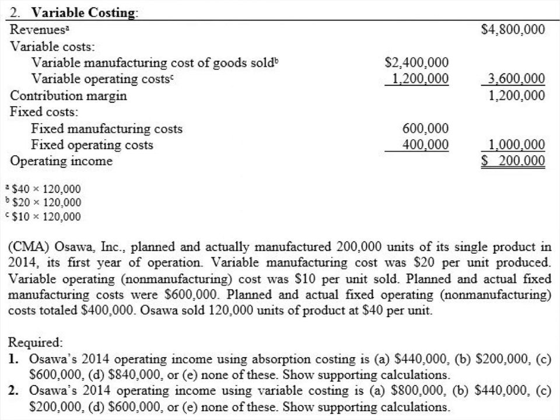Let's think about whether this makes sense. Under variable costing we're expensing all fixed costs when incurred. But under absorption costing, fixed manufacturing costs do not get expensed when incurred — they only get expensed when a product is sold. So if we're keeping any ending inventory, some of those fixed manufacturing costs are not being expensed yet, which is why absorption costing shows higher income in this case.